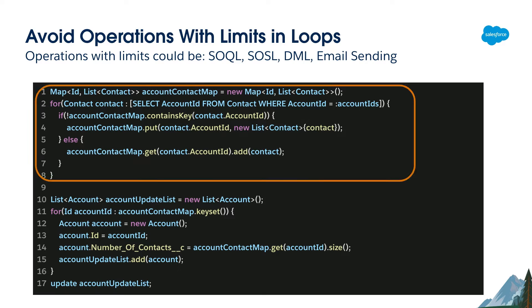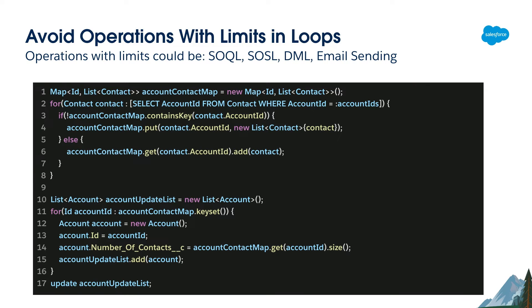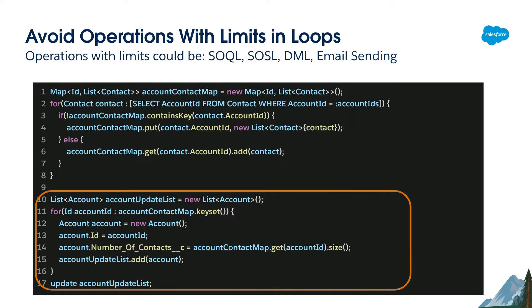One way to solve that is to utilize maps. Maps have a special data structure where you can have a key — such as account ID — and a value, which is a list of contacts. So you construct a map where for each account ID you have the list of contacts belonging to that account, using methods like get and put. Then you loop on the map, use map.get to retrieve the contact list, list.size to count them, and perform the DML update outside the for loop.